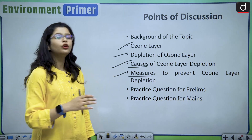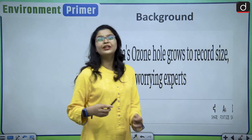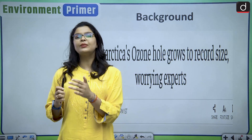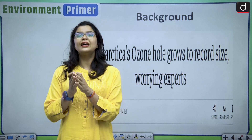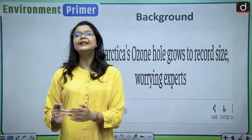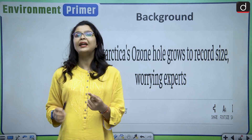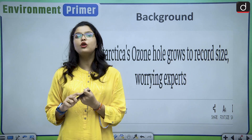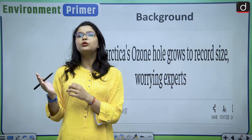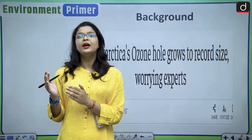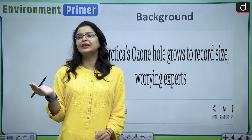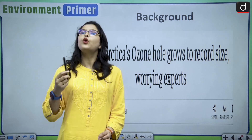If I talk about the background of our today's topic, the ozone layer over Antarctica has grown bigger. Scientists have found out by analyzing satellite images that the ozone hole over Antarctica is growing bigger in size, which is very worrisome for the world. This growth in size of the ozone hole is attributed to a recent volcanic eruption in 2022, which released a large amount of water vapor into the atmosphere, hence depleting the ozone layer.